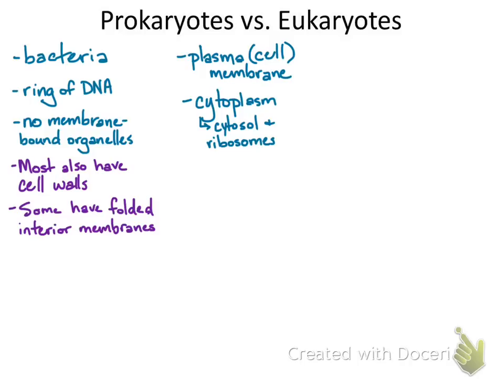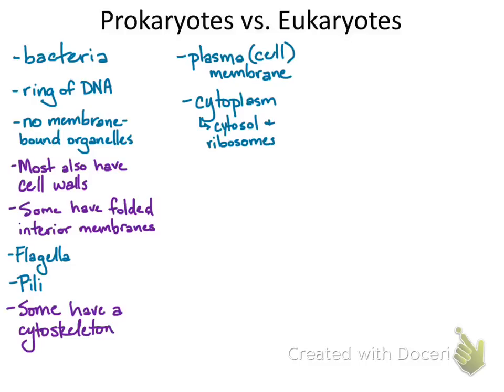Prokaryotes are single-celled, so they need a way to get around. Flagella are long, corkscrew-like tails that help propel them through their environment. Hair-like pili also allow them to stick to each other and other surfaces. Some prokaryotes even have a crude cytoskeleton that provides a frame just underneath the plasma membrane to help support their shape, which is especially important to the rod-shaped bacteria.